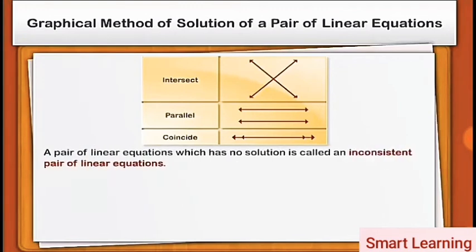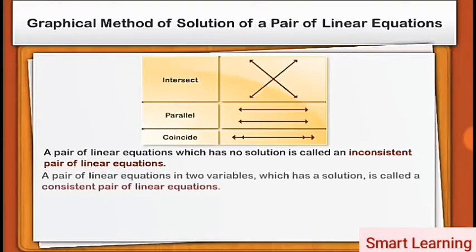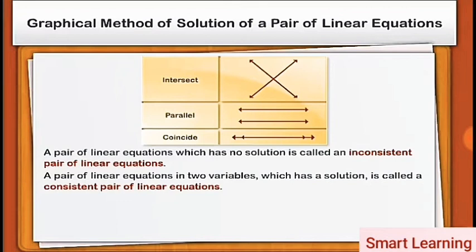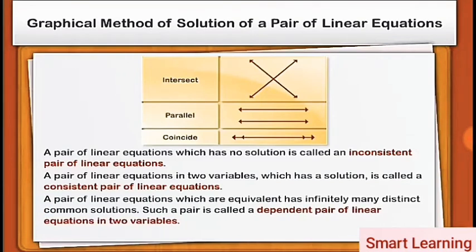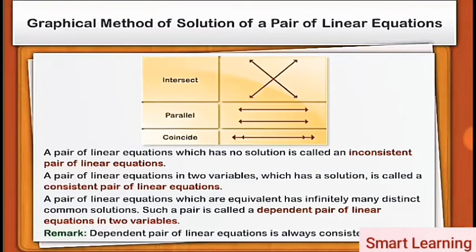A pair of linear equations which has no solution is called an inconsistent pair of linear equations. A pair of linear equations in two variables which has a solution is called a consistent pair of linear equations. A pair of linear equations which are equivalent and has infinitely many distinct common solutions is called a dependent pair of linear equations in two variables. A dependent pair of linear equations is always consistent.